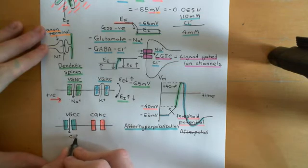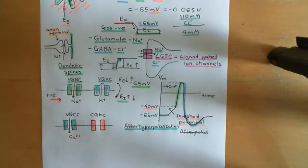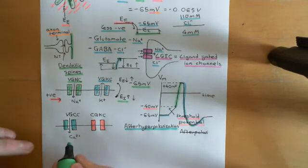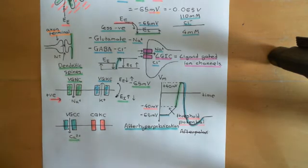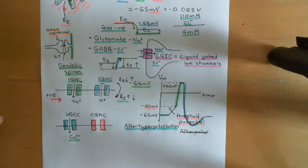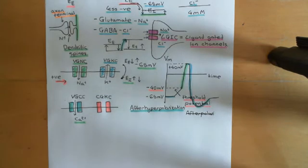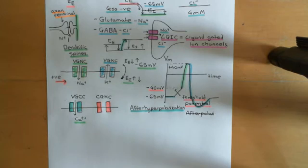When voltage-gated calcium channels open, we don't even need to consider the electrical gradient across the cell membrane. With calcium, there is a 15,000-fold gradient in the concentration of calcium across the cell membrane. No electrical potential difference you could ever dream up that would be physiological across a neuron cell membrane is ever going to stop calcium from coming in when you open a calcium channel. So when you open the voltage-gated calcium channels, you'll be getting a little bit of calcium coming into the cytoplasm of the cell.